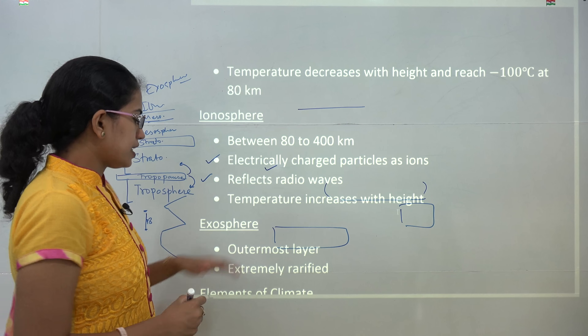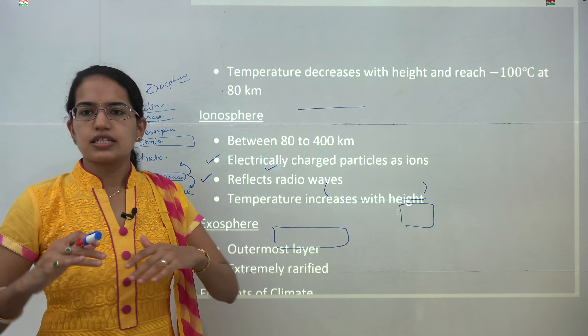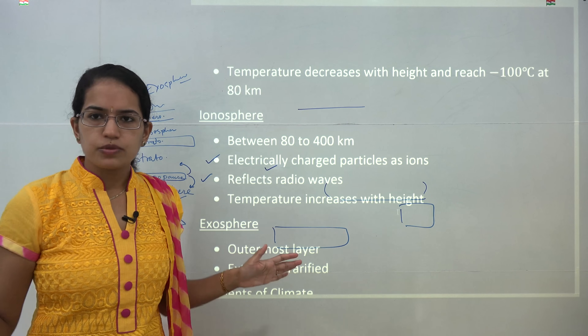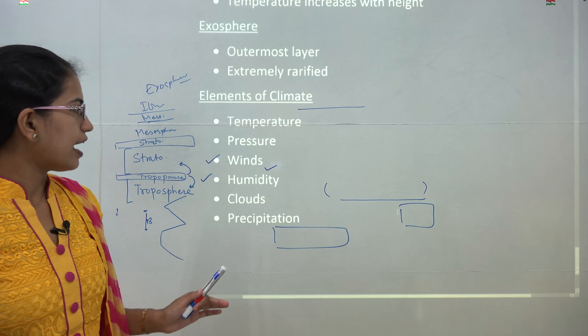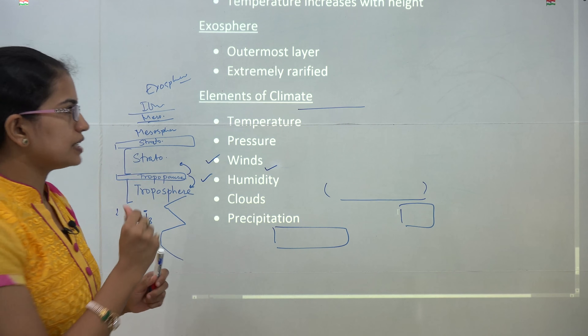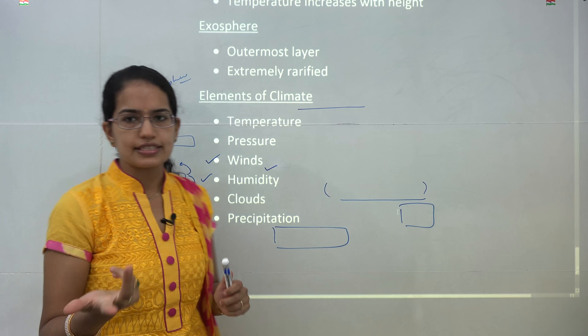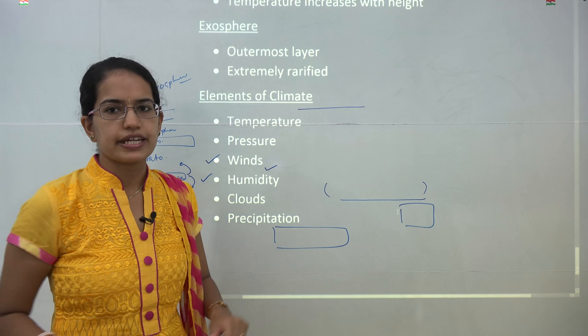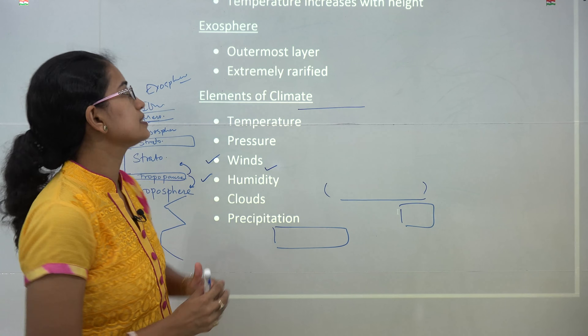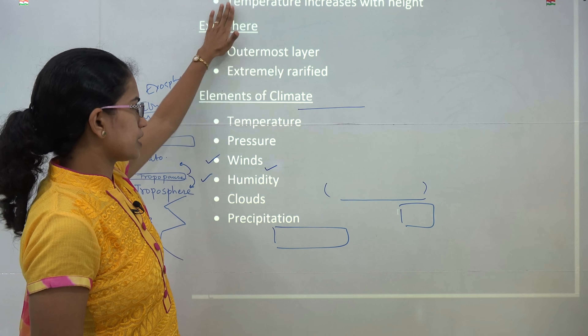The exosphere is considered the outermost layer. It is highly rarefied and does not have much gas present. It is extremely rarefied — that is the exosphere.